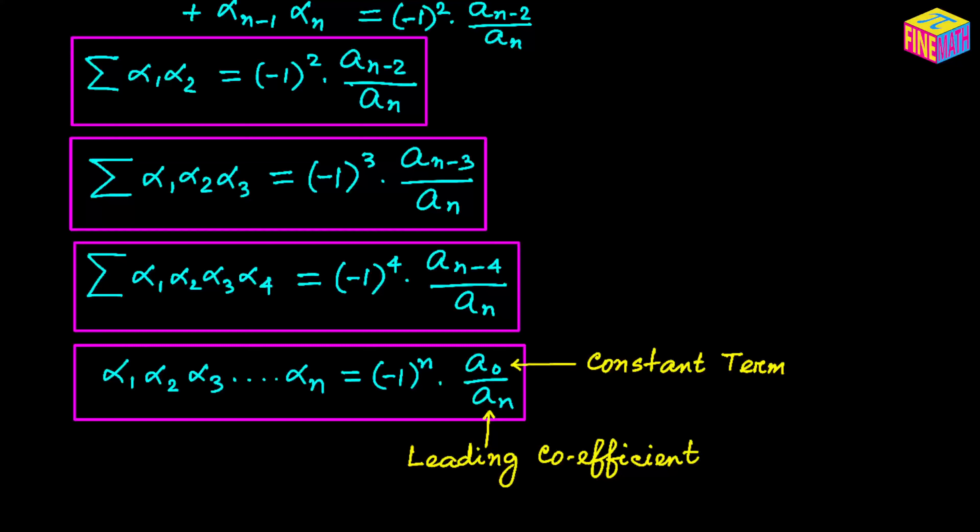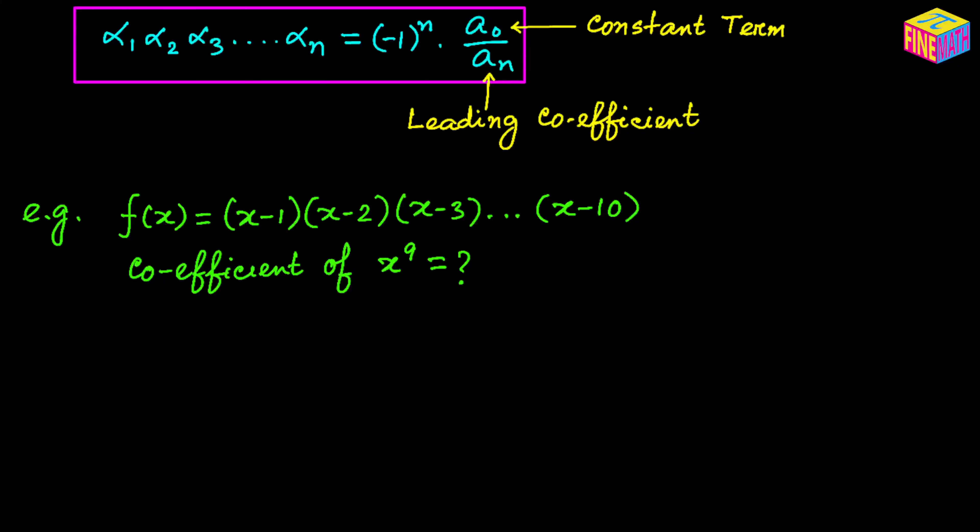Now let's take an example to see how we can utilize this concept. Suppose we have f(x) = (x minus 1)(x minus 2)(x minus 3) ... (x minus 10). This is a factor form of a degree-10 polynomial expression. The question is: if we expand this function, what would be the coefficient of x to the power 9? Clearly the leading coefficient is 1, so the coefficient of x to the power 10 is 1, but we need to find the coefficient of x to the power 9.